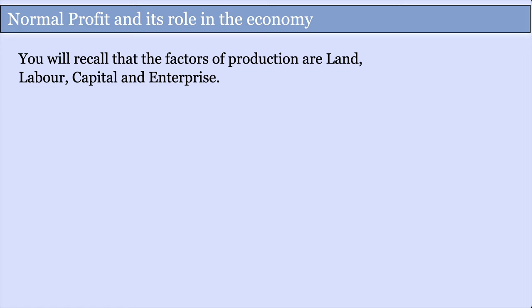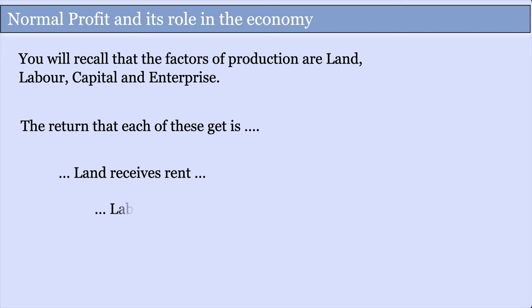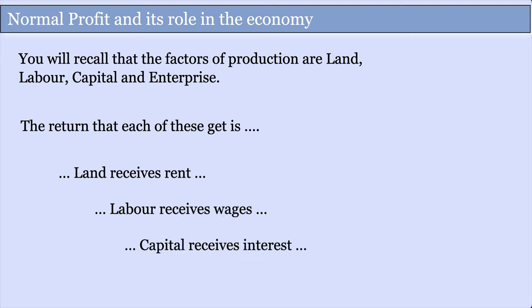This video we're going to look at the role of normal profit in the economy. You'll remember from the year one material that there are four different factors of production: land, labour, capital, and enterprise. The return that each gets is: for land you get rent, for labour you get wages, for capital you pay interest, and for enterprise you receive profit. We're going to delve deeper into this whole area of profit in year two material.